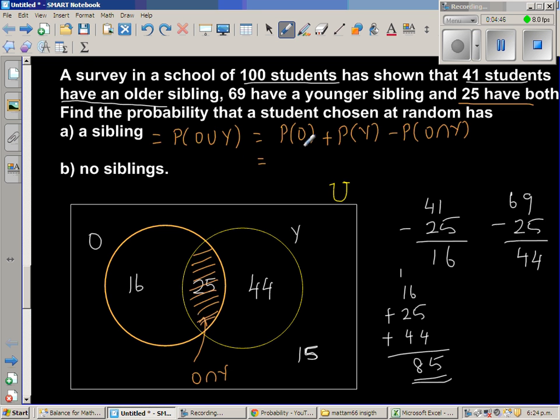So this is equal to, so probability of O is, you don't need to do all the steps, but just to explain this rule, I'm doing this. So probability of O is 41 out of 100. 41 out of 100 plus probability of Y, that is a student having a younger sibling is 69 out of 100. So when you're doing 41 over 100 plus 69 over 100, you're adding this twice. So you take away this area once, that is 25 over 100, which is 41, 41 plus 69, so let me do 41 plus 69, is 1, this is 100, so it's 110.